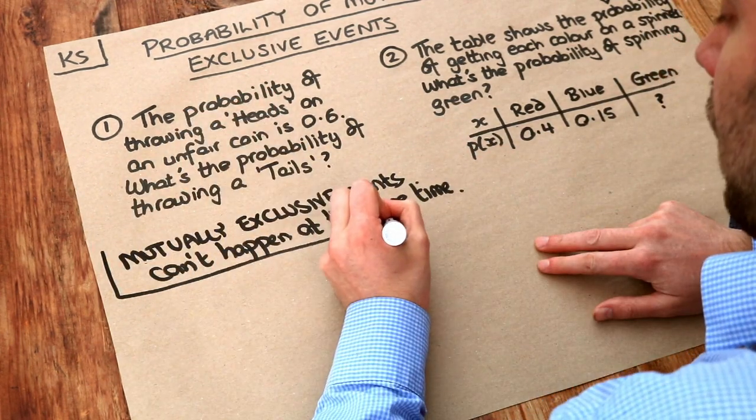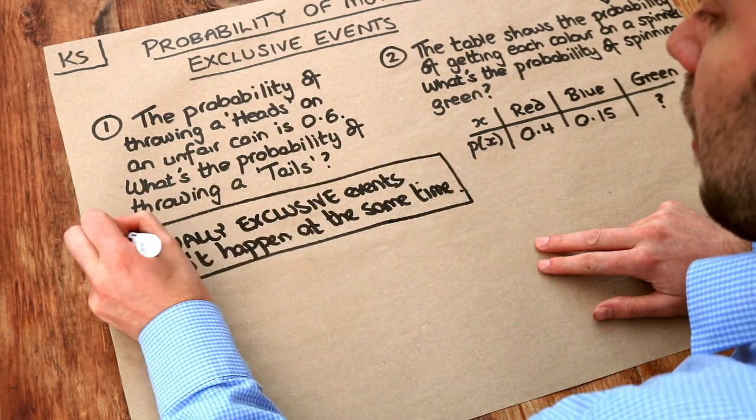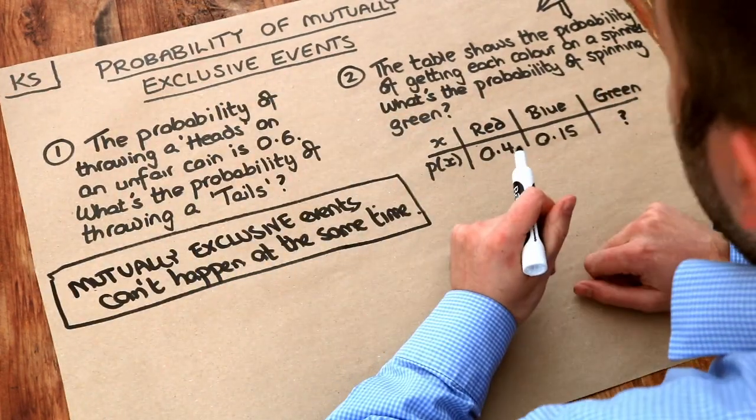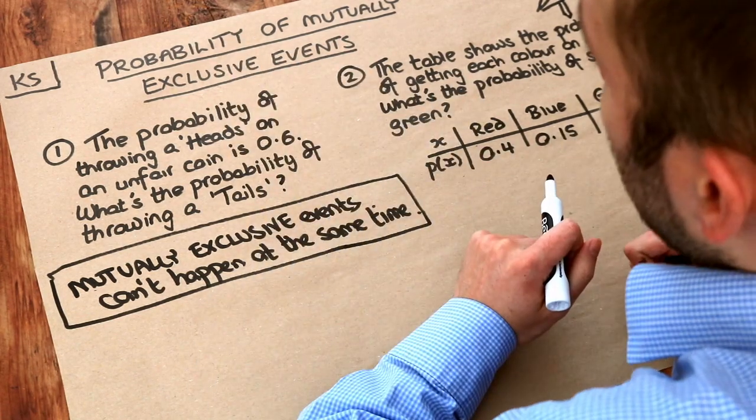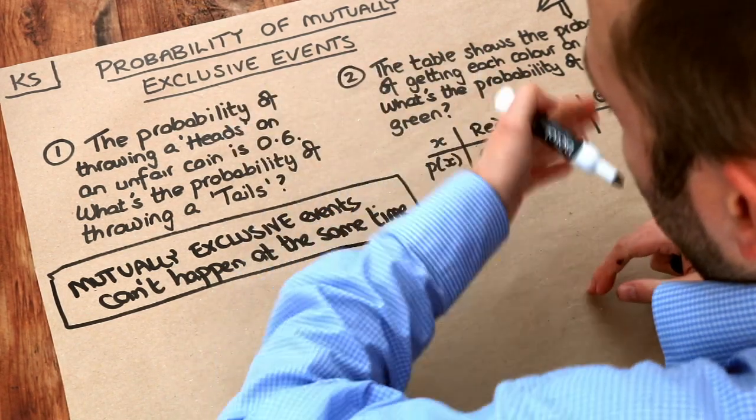For example, it might be throwing a head on a fair coin or an unfair coin. It might be spinning a green on a spinner, or winning the lottery, or throwing an odd number on a dice, which would be more than one outcome.